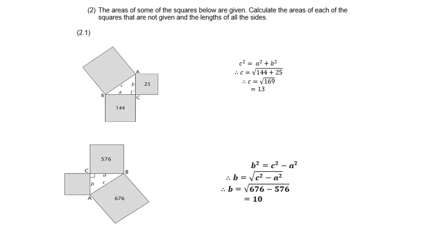Let's look at the next example, 2.1. The area on BC is 144, so side a must be 12, since 12 times 12 is 144. The area on side b is 25, so side b must be 5. Therefore, c squared equals a squared plus b squared, so c equals the square root of 144 plus 25, which is 169. The square root of 169 is 13.